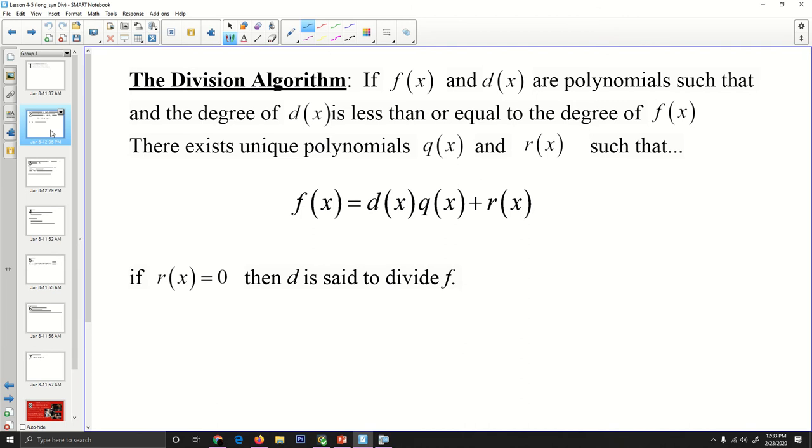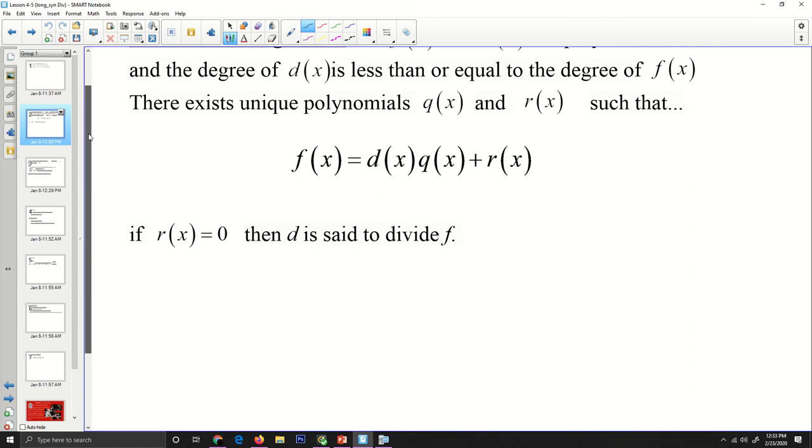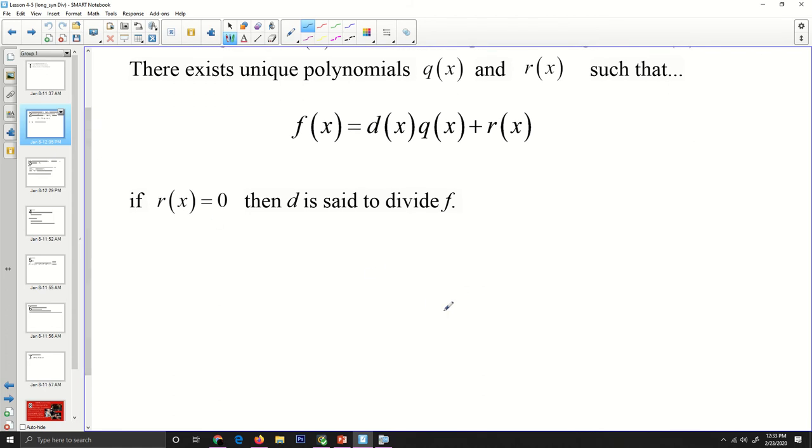What does that mean? In the division algorithm, if f(x) and d(x) are polynomials such that the degree of d(x) is less than or equal to the degree of f(x), there exists unique polynomials q(x) and r(x) such that f(x) equals d(x) times q(x) plus r(x). If that r(x) equals zero, then d is said to divide f. That seems awful complex, but it makes a whole lot of sense if we think about it in the context of numerical values.